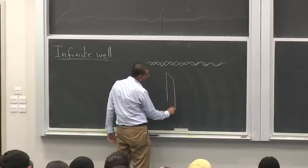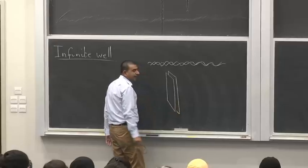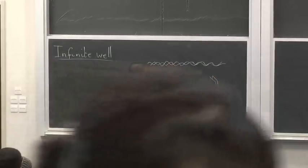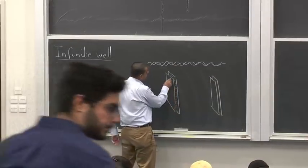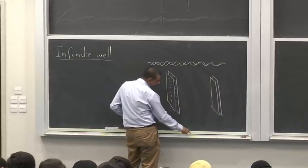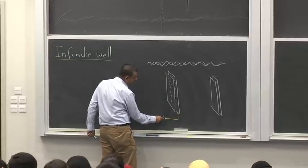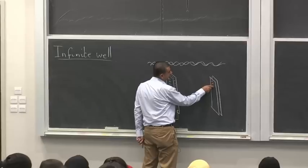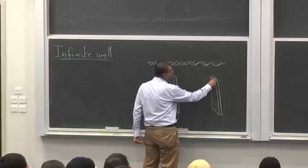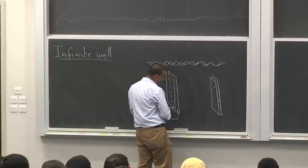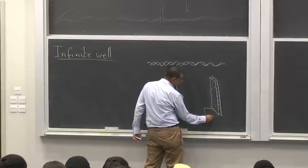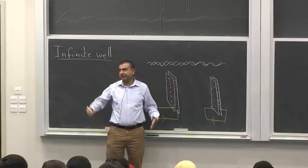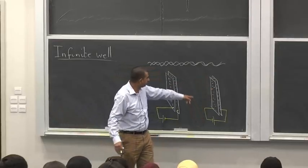Another possibility is the following arrangement of plates. Suppose we have a pair of plates here and another pair of plates at some distance. This plate is negatively charged and this plate is positively charged — charged by connecting them with a battery. Likewise, we have a negative charge on this plate and a positive charge on this plate, charged in an analogous fashion.